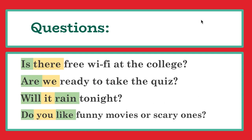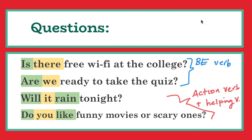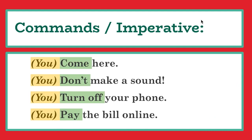This is also true for questions. In a question, the verb is before the subject. Is there free Wi-Fi at the college? Are we ready to take the quiz? Will it rain tonight? That's an action verb, rain. Do you like funny movies or scary movies? All of those are examples of one subject, one verb.